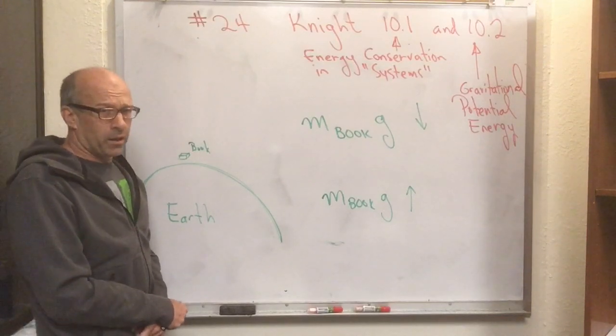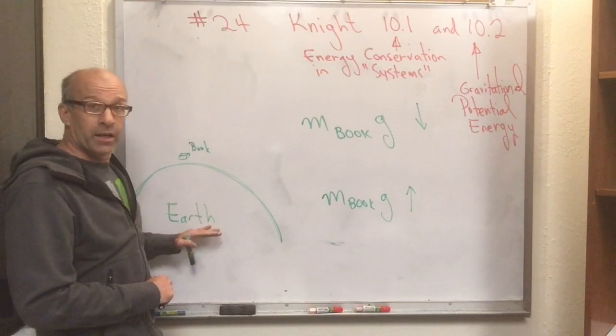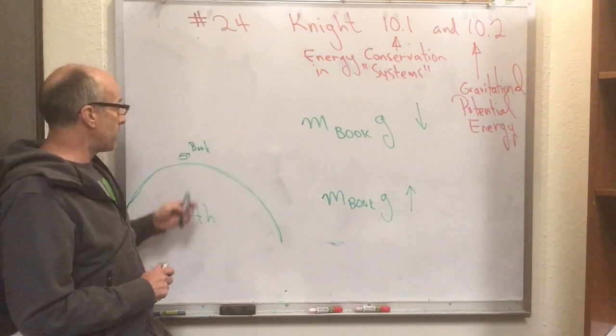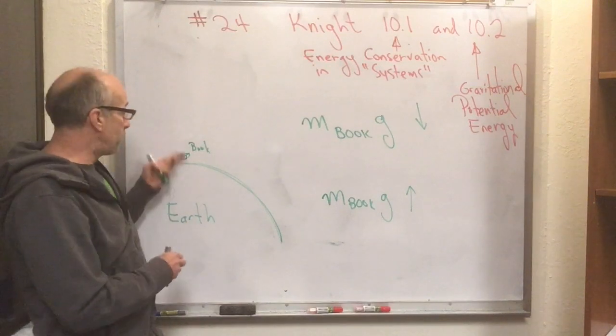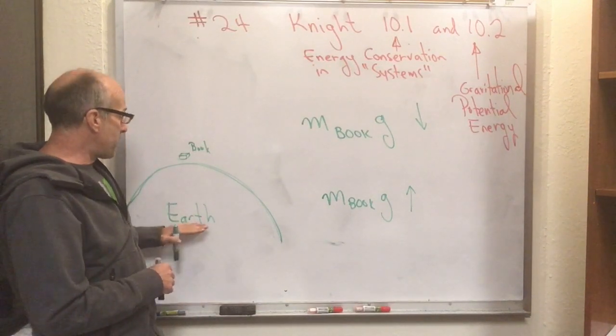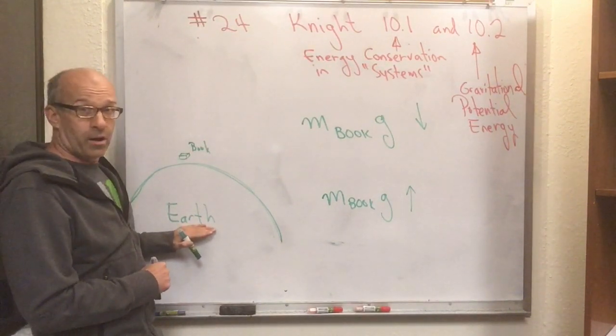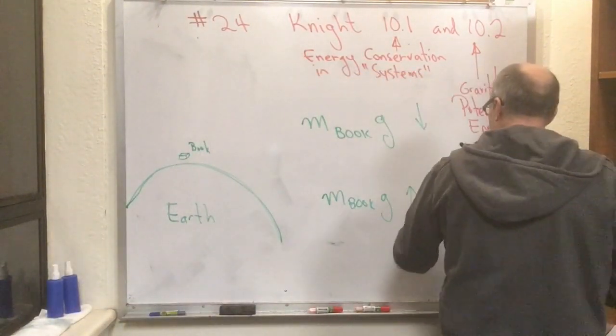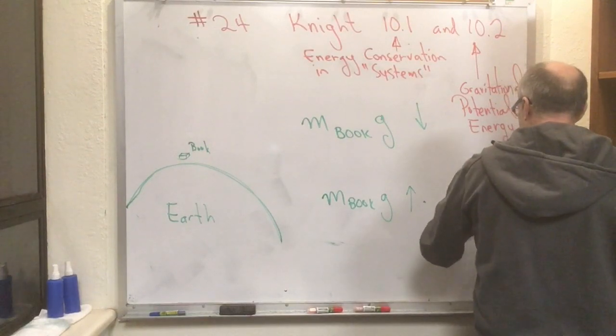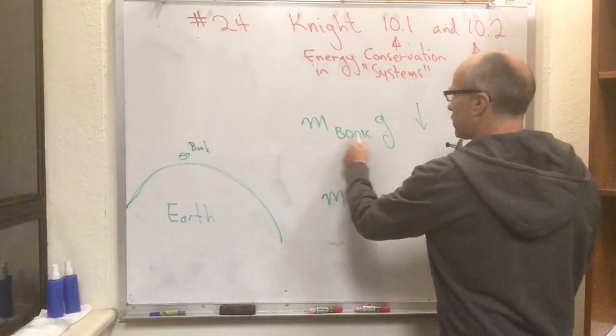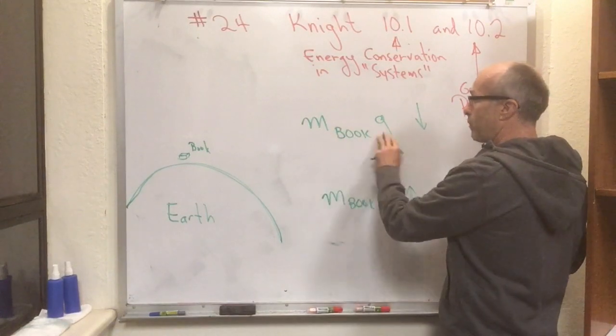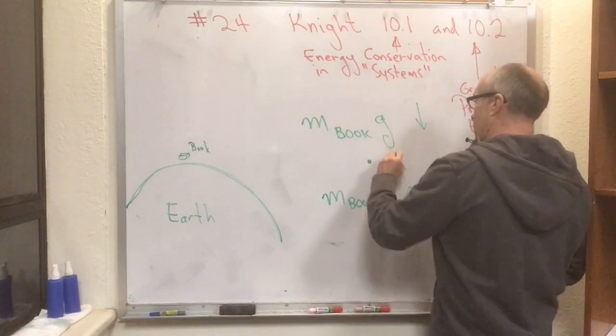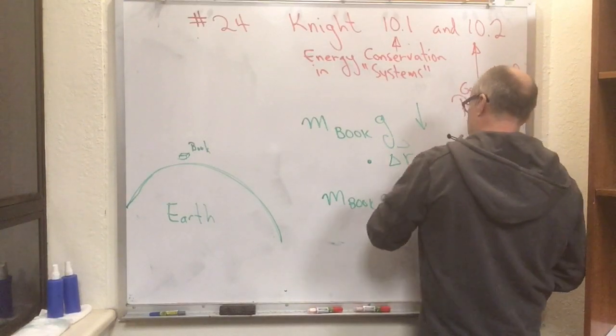The big mass hardly moves at all. And in this case, the Earth moves an utterly negligible amount. So you can calculate the work done on the book and the work done on the Earth as these two fall towards each other. And because the Earth moves hardly at all, the work done on the Earth, which is this force dotted into delta R of the Earth, is utterly negligible compared to the work done on the book, which is this force dotted into delta R of the book.